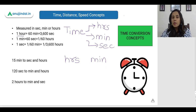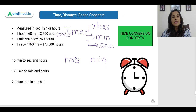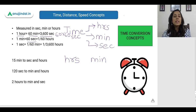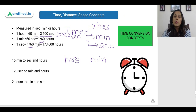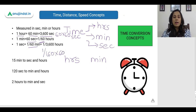So 1 hour equals 60 minutes and 1 minute is equal to 60 seconds. Therefore 1 hour equals 60 into 60 seconds, which comes out as 3600 seconds. Similarly, 1 minute is equal to 1/60th of an hour. 1 second is equal to 1/60th of a minute, which is also equal to 1/(60×60) hours, which is 1/3600 hours.